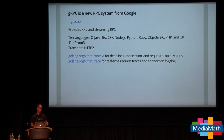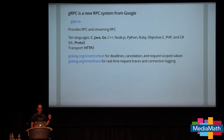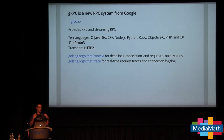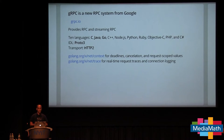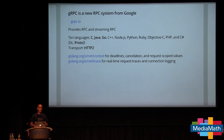The interface definition language is Proto3, a new version of protocol buffers that provides important simplifications making it work really nicely with Go. The transport is HTTP2, which provides bidirectional streaming and long-lived connections. I'm going to make heavy use of two packages from the net sub-repository: context, which I talked about last year at this conference, providing deadlines, cancellation, and request-scoped values that propagate across RPC connections; and a new package called nettrace, providing real-time request traces and connection logging.